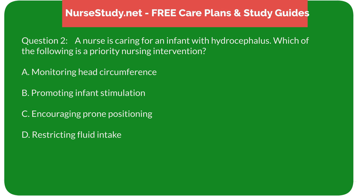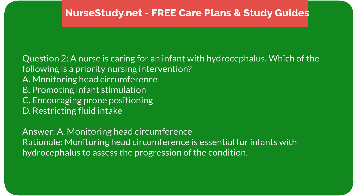Question 2: A nurse is caring for an infant with hydrocephalus. Which of the following is a priority nursing intervention? A) monitoring head circumference, B) promoting infant stimulation, C) encouraging prone positioning, D) restricting fluid intake. Answer: A) monitoring head circumference. Rationale: Monitoring head circumference is essential for infants with hydrocephalus to assess the progression of the condition.